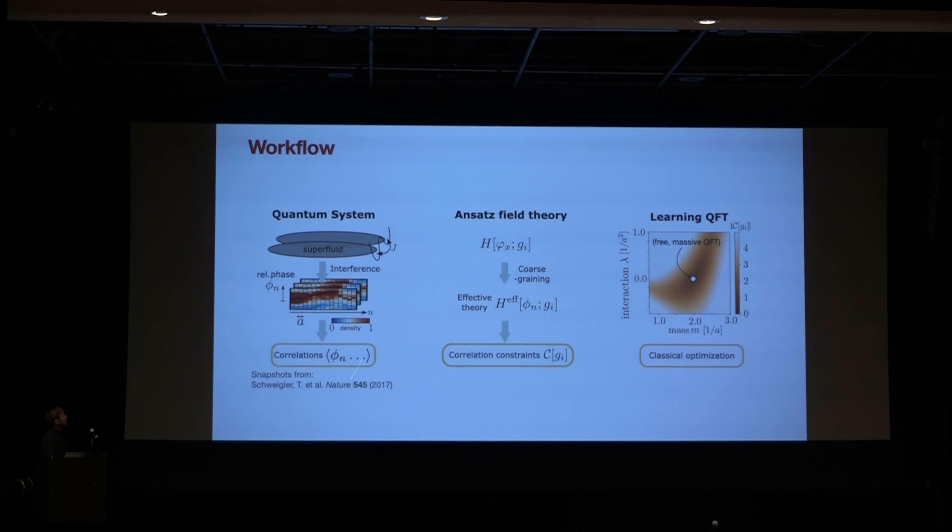So we think about a continuous quantum system in the beginning, and here we will be working with the experiment of Jörg Schmiedmayer, which is in Vienna. And so here the idea is that we can extract a set of correlation functions at these discrete points in space. And then, as I just described, we start from an ansatz theory, we derive the effective theory, and then, as in the beginning, derive a set of correlation constraints. So ultimately, all of this comes down to a classical optimization problem.